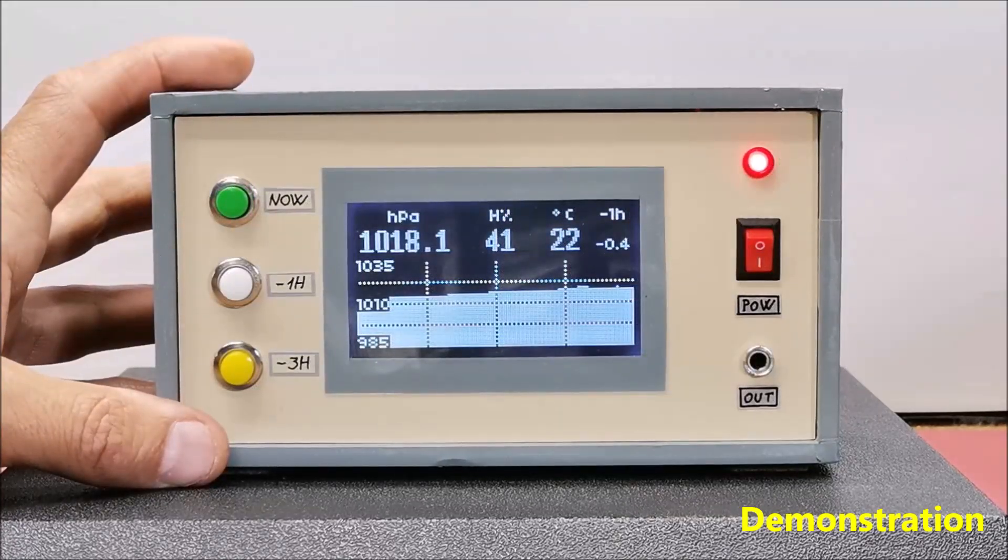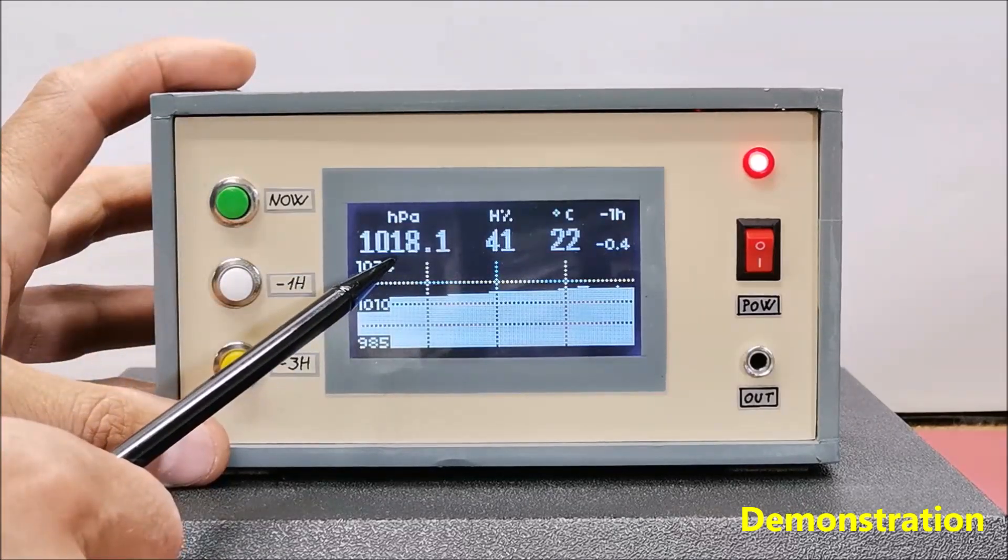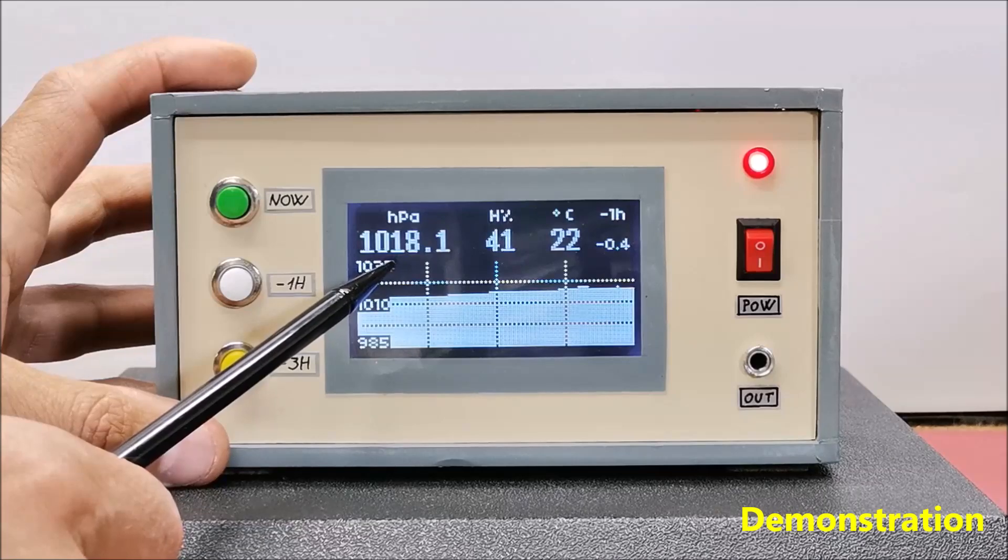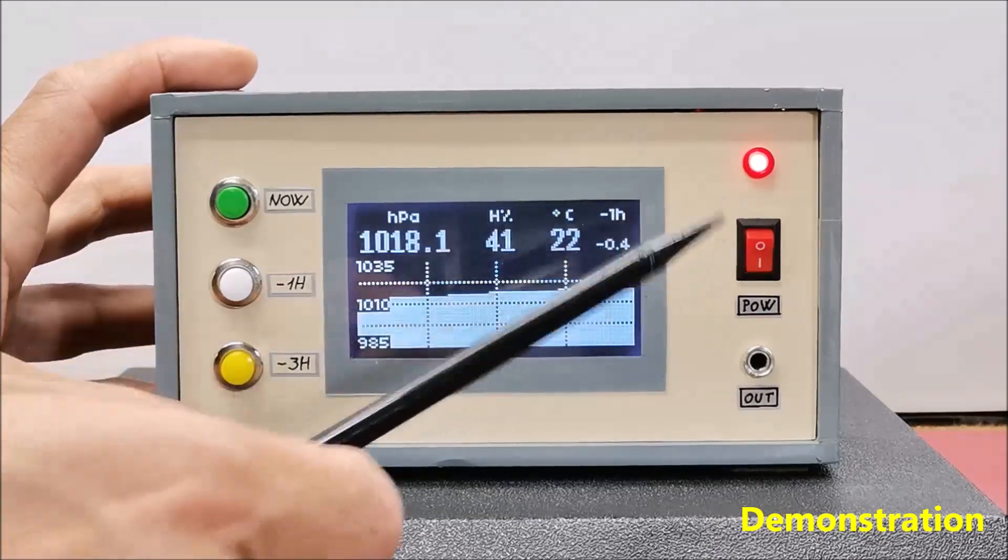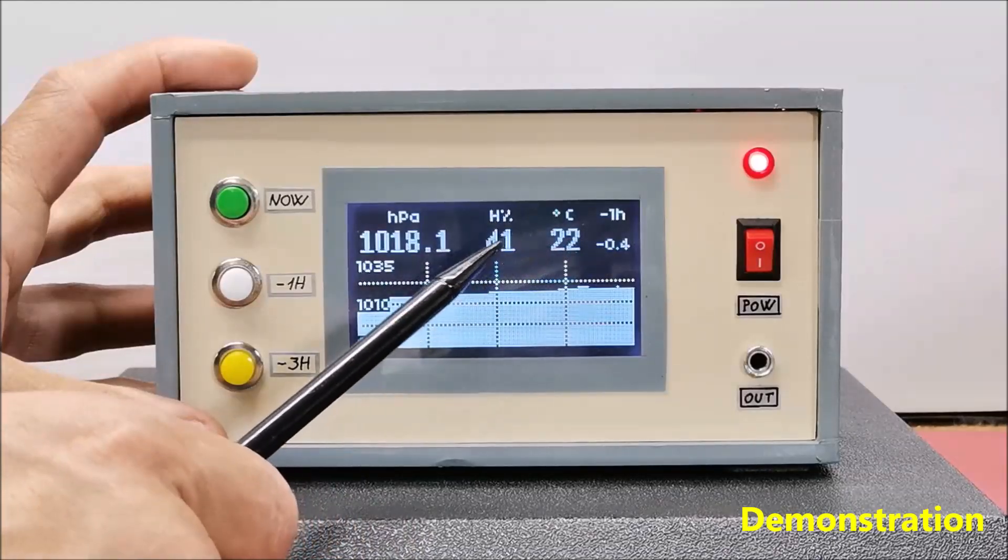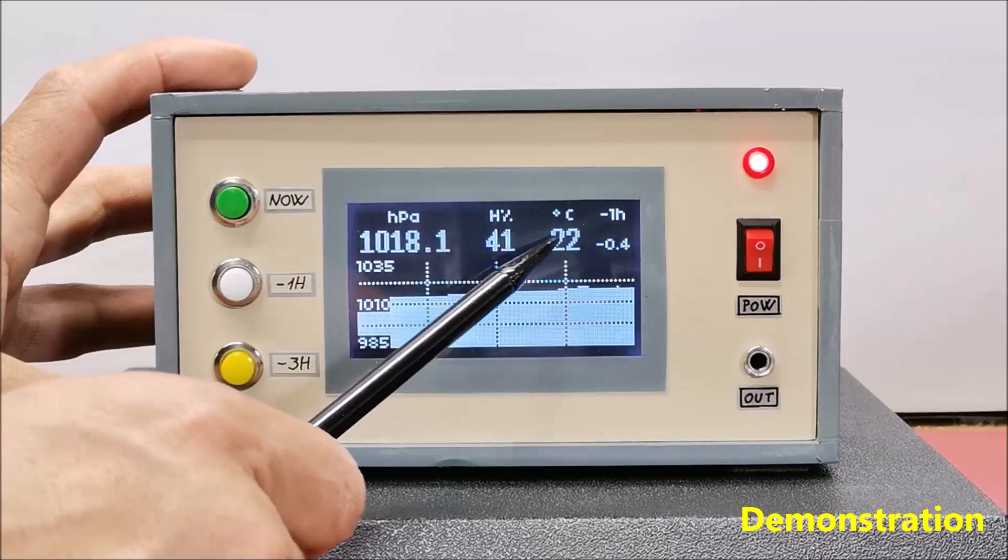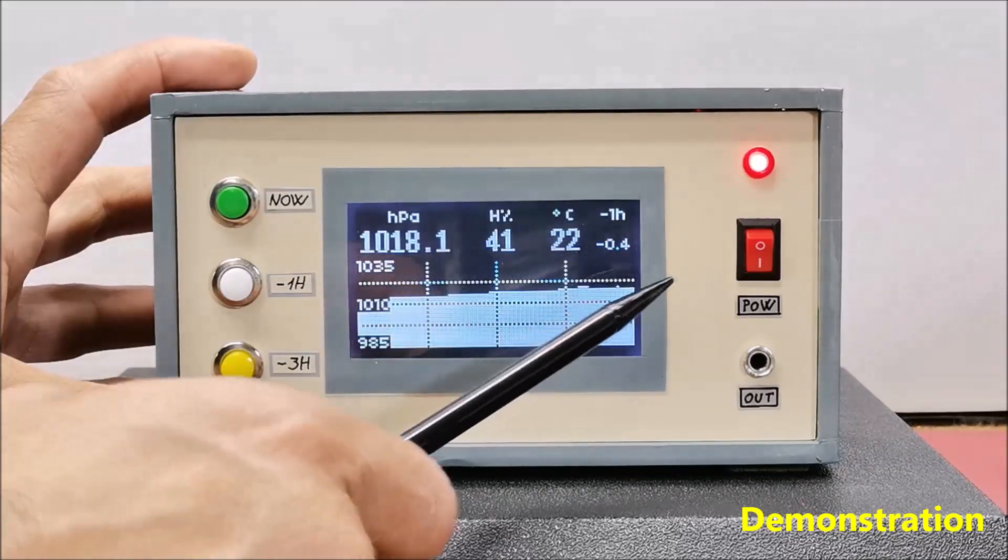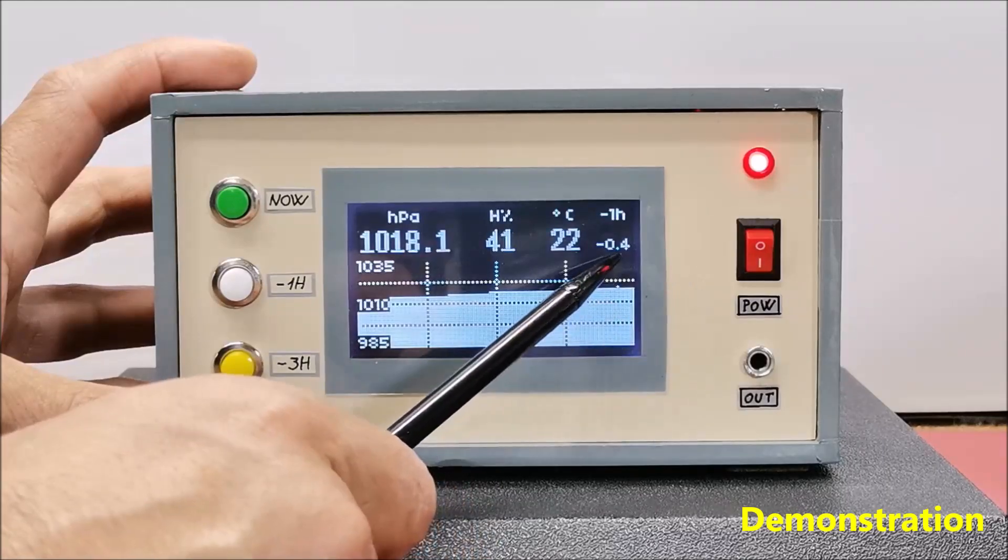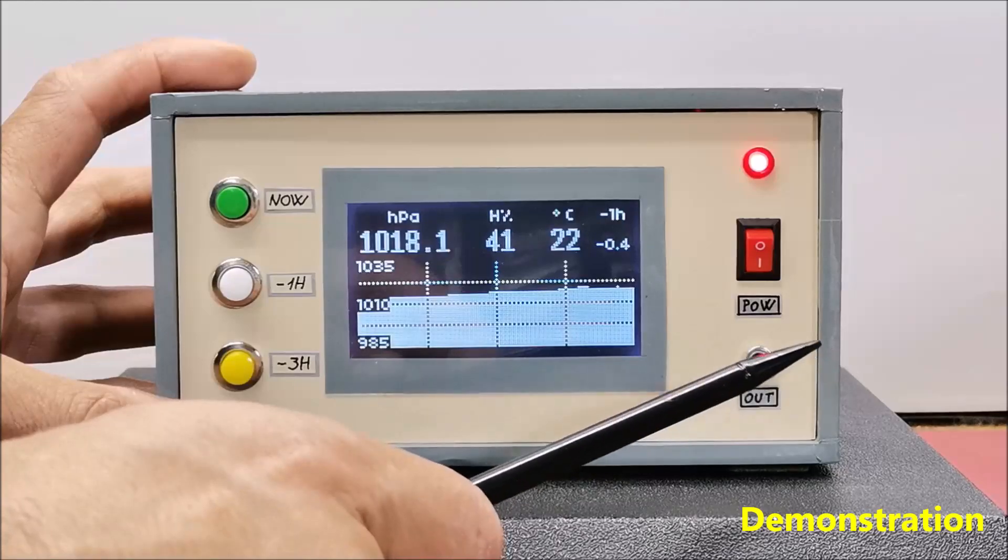As you can see there is still a lot of useful information on the screen. Here is the value of the current relative atmospheric pressure with a precision of one decimal place expressed in hectopascals, then the relative humidity of the air expressed in percent, as well as the current temperature in degrees Celsius. On the far right in small numbers is shown the numerical value of the pressure trend in the last hour.